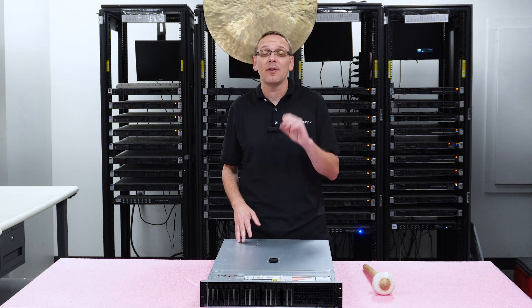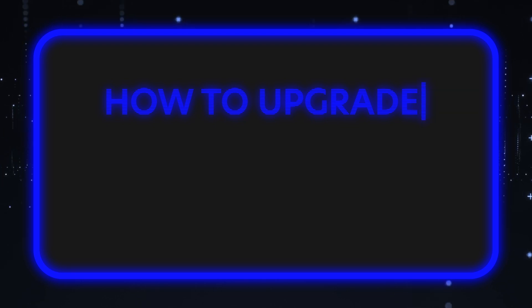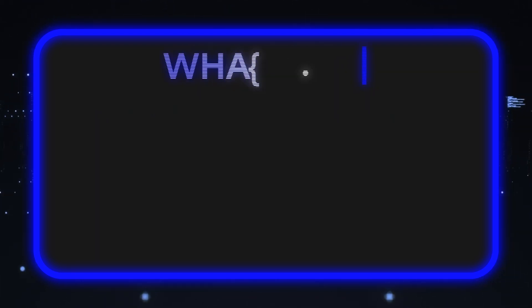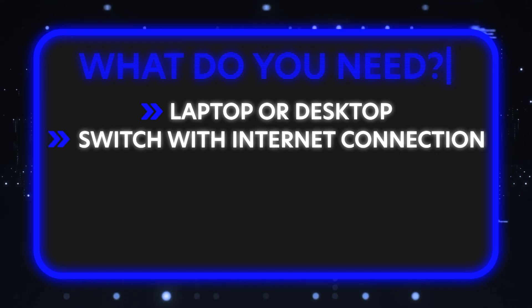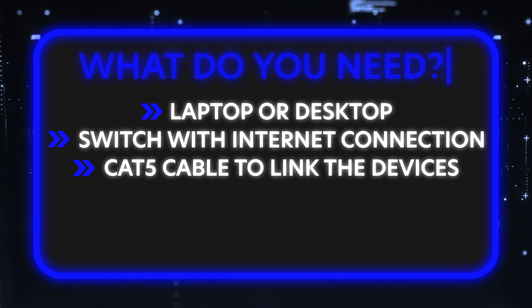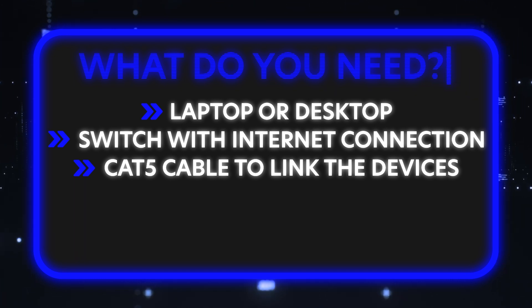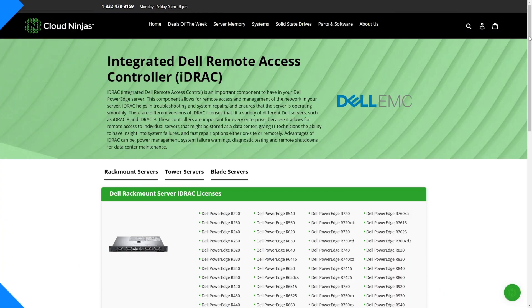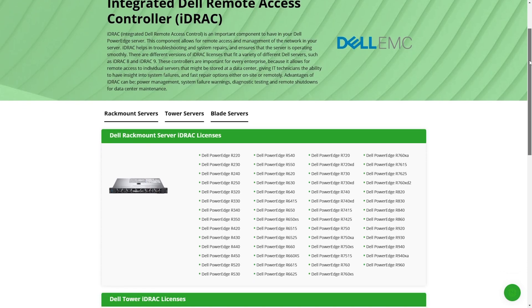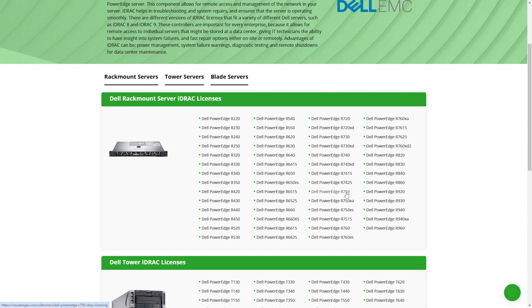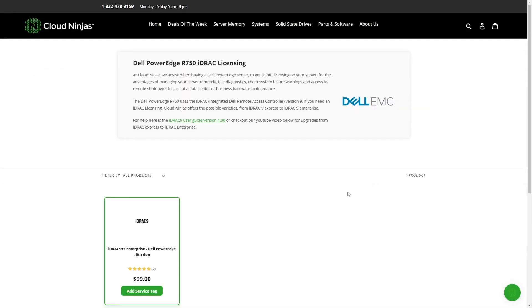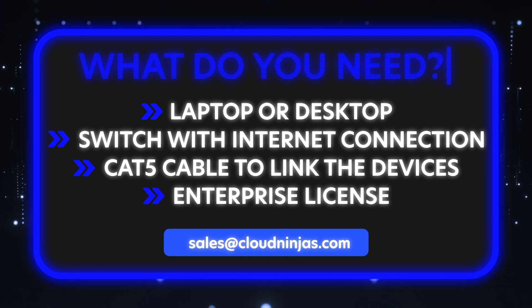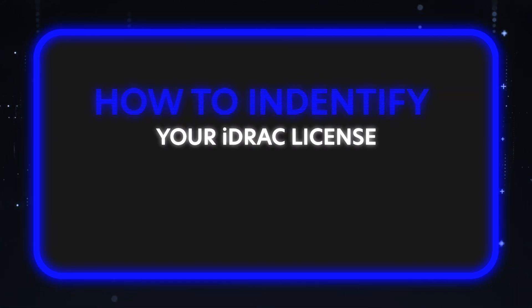We'll start by showing you how to identify what type of license you have. To upgrade your iDRAC license from basic management to Enterprise, you're going to need a laptop or desktop, a switch with an active internet connection, and Cat5 cables to run from the switch to the iDRAC port and to the laptop or desktop. You'll also need an Enterprise iDRAC license, which can be found on CloudNinja.com. We sell Enterprise licenses for Dell 12th, 13th, 14th, and 15th Gen servers — reach out to sales@cloudninja.com. The license should be in the form of an XML file.